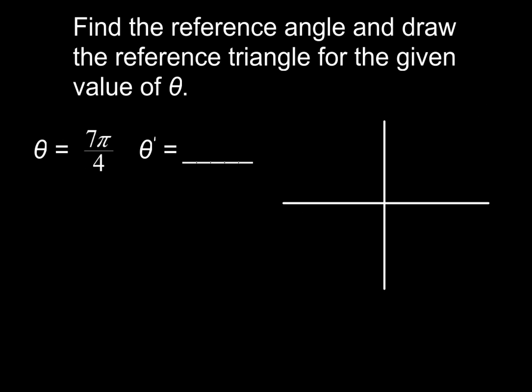Now next, we're going to take a look at finding the reference angle and drawing a reference triangle for a value of θ that's in radians. So here we've got 7π/4. Now one of the things you want to do is recognize that if you were to draw that on the unit circle, 7π/4 would go all the way around and be in quadrant number 4. So quadrant number 4. So what we're going to do, this spot right here, that's 2π if we go all the way around.